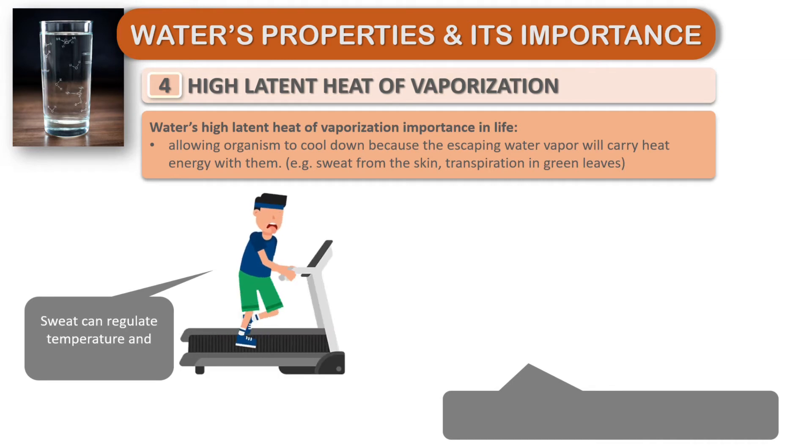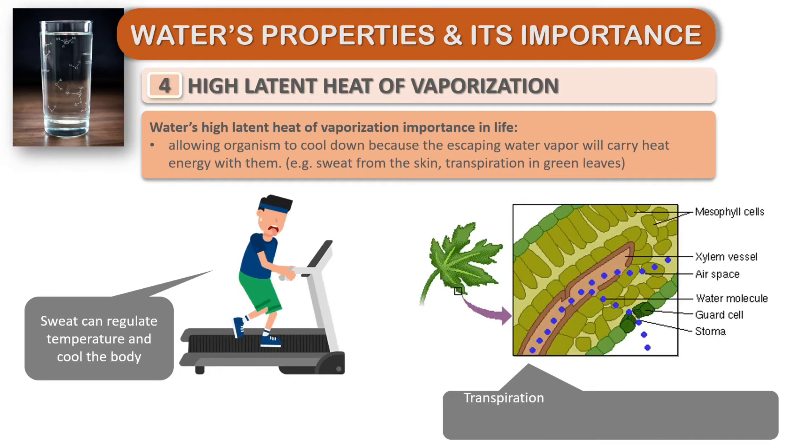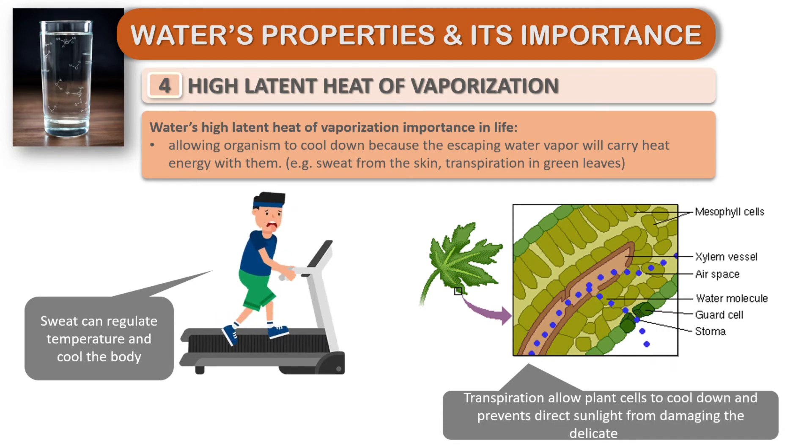Sweat can regulate temperature and cool the body. Transpiration allows plant cells to cool down and prevents direct sunlight from damaging delicate cells.